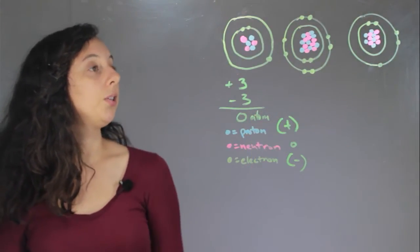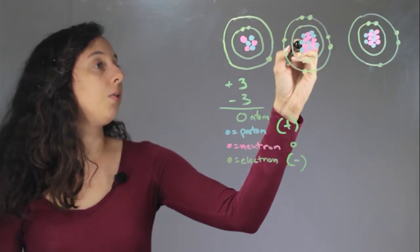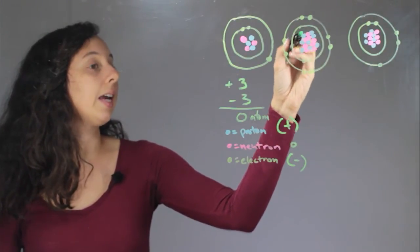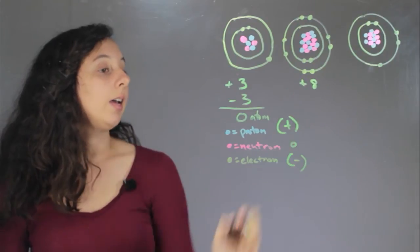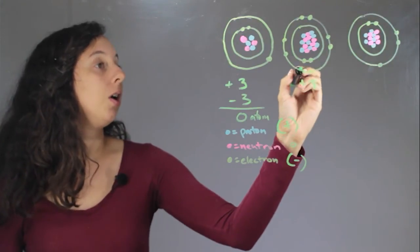Now over here protons we have one, two, three, four, five, six, seven, eight. So it has a charge of positive eight. And electrons we have one, two, three, four,